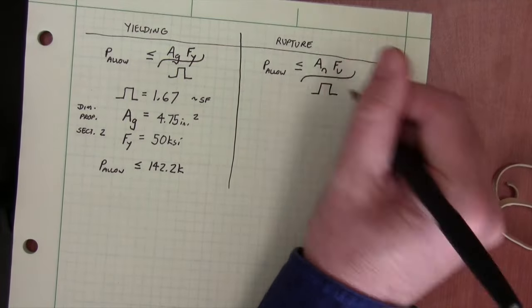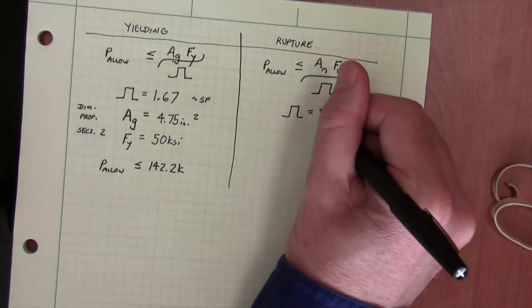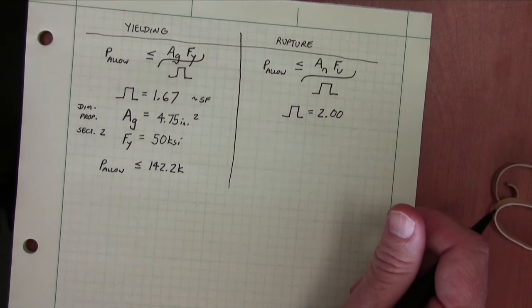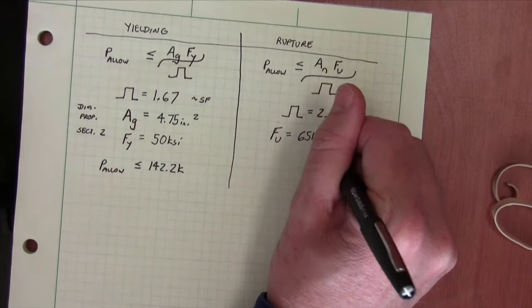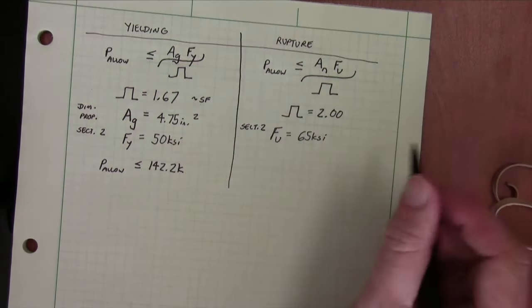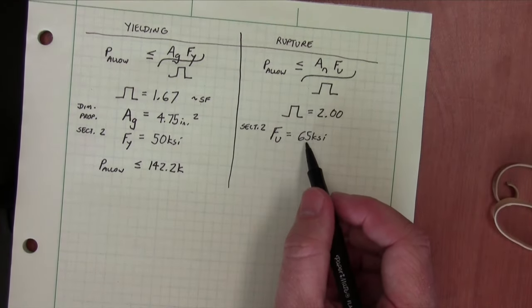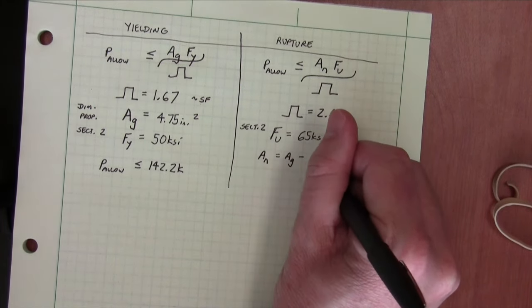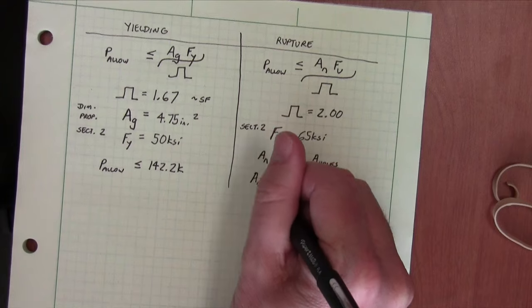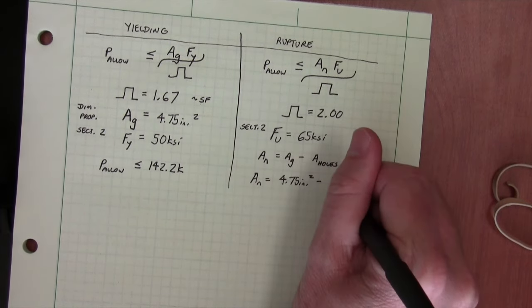In rupture, we have much the same formula, only we use the net area and the ultimate stress and a safety factor or omega of 2.0. In this case, the ultimate stress from section two of the manual is 65 KSI. And the net area is simply the area of the gross section minus the area of the holes.